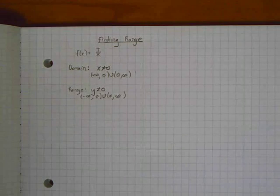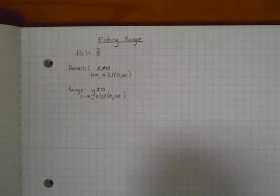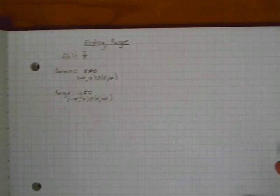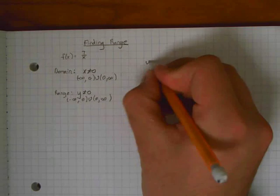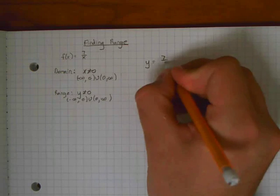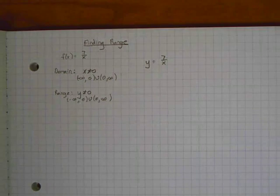Now this is not always the most effective way to find range. So I'm going to show you another way here. I'm going to take my function and rewrite it as y equals 7 over x. So we have this function.